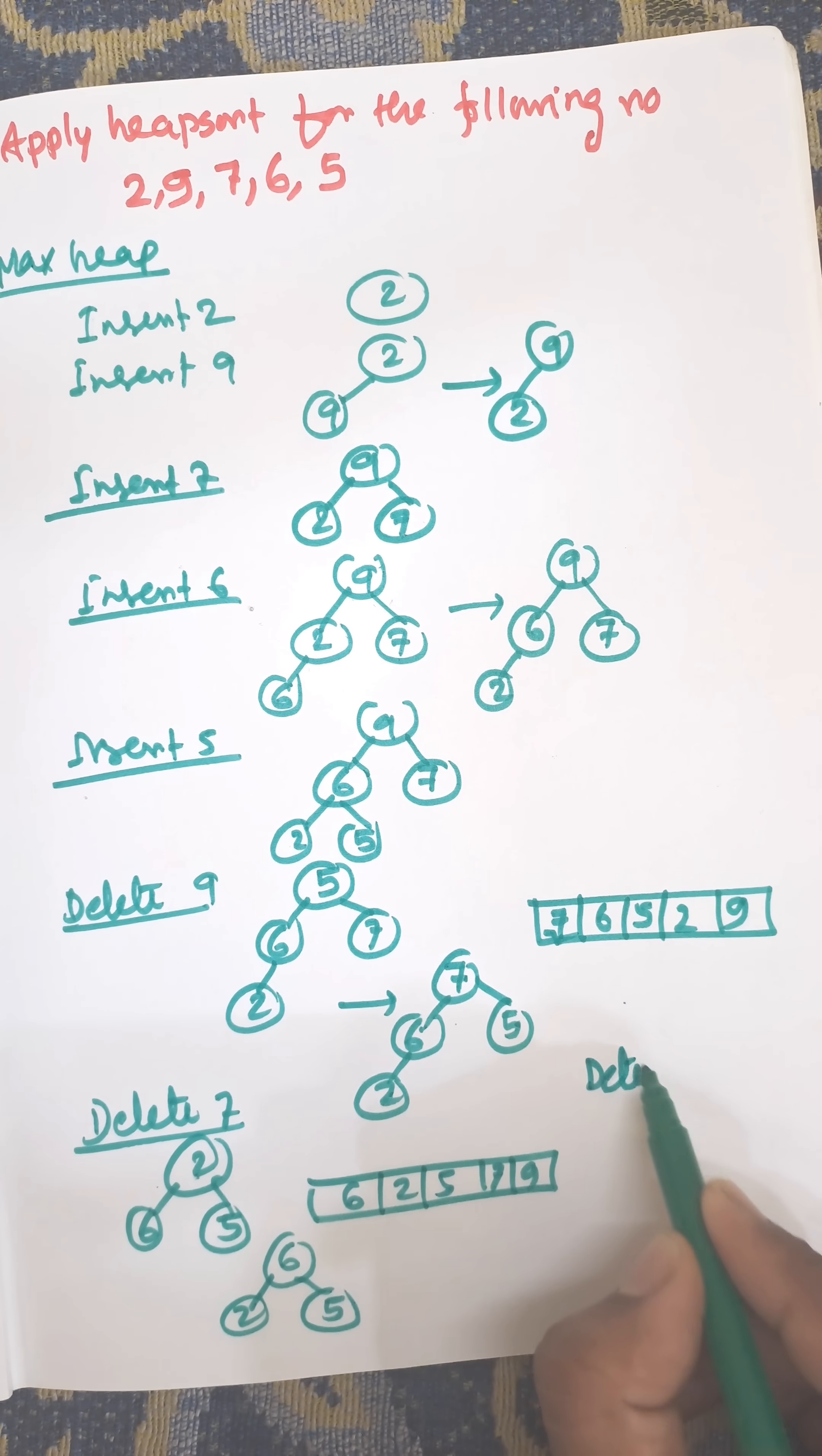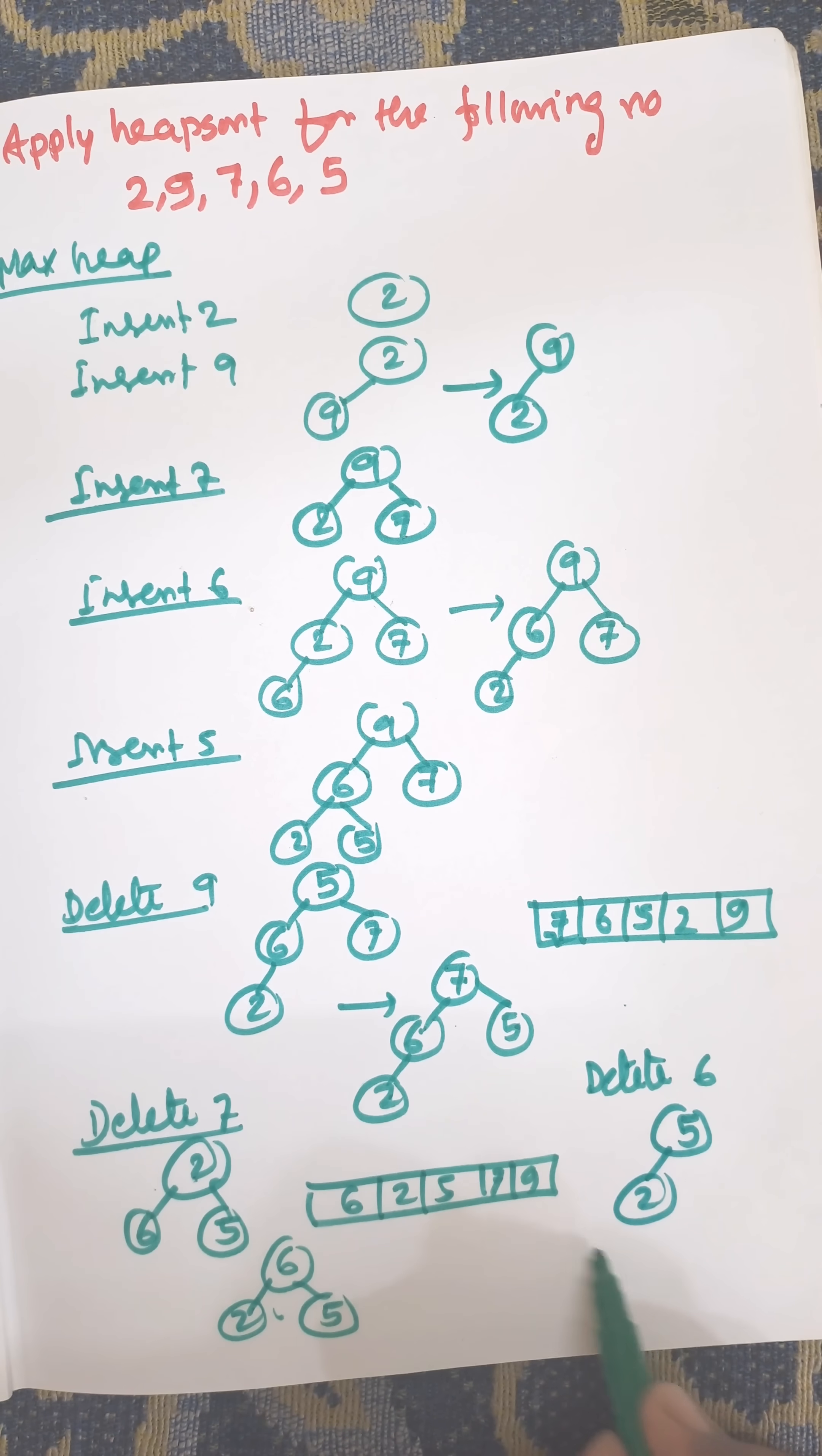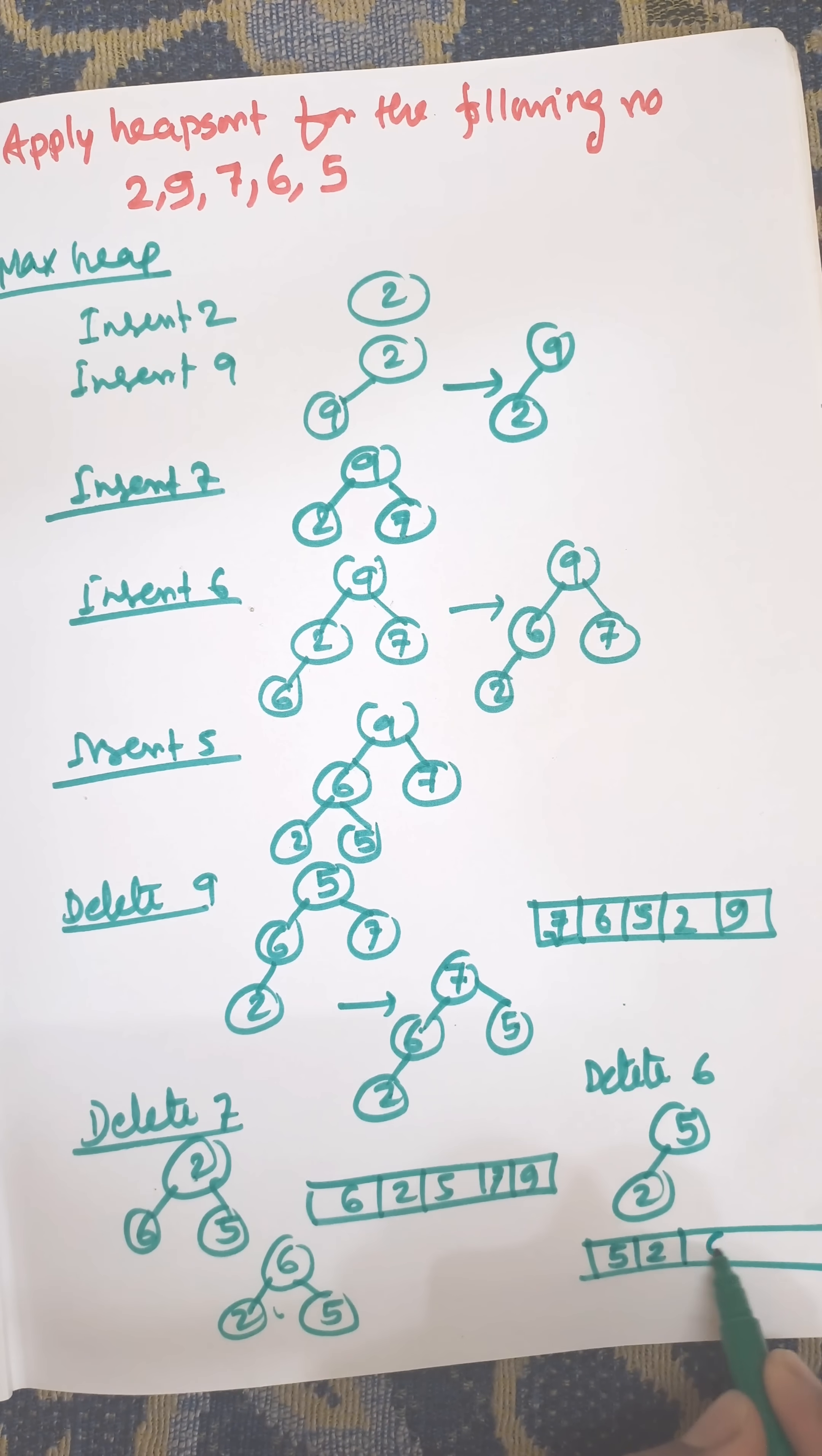Now delete 6. When you delete 6, the last node is 5. 5 will be the next root. 5 and 2. The array will be 5, 2. And the deleted elements are 6, 7, 9.